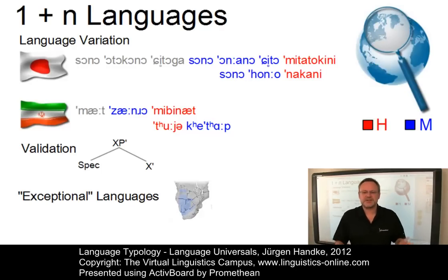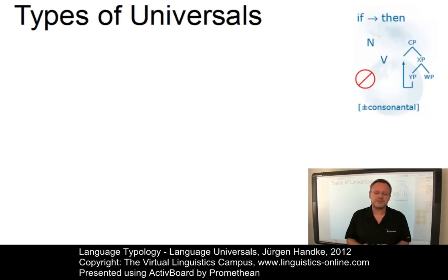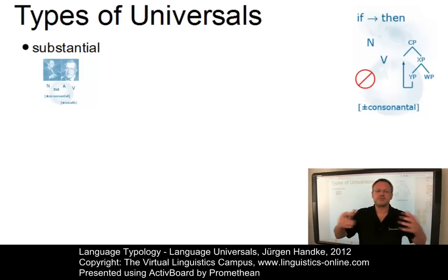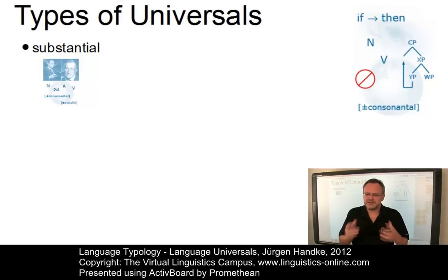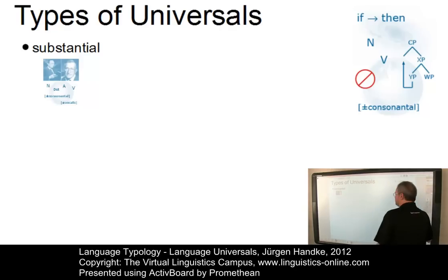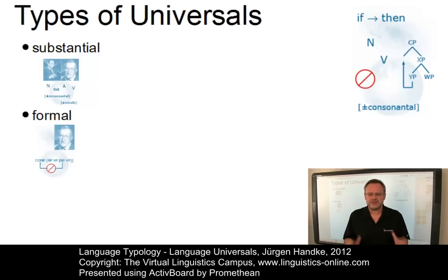Let us now look at the various types of universals that can be postulated. Universals can be categorized along several parameters. There are, for example, substantial universals — categories that must be present in each individual human language, such as the set of open-class syntactic categories: noun, verb, adjective, and so on. Formal universals are statements on the form of rules of grammar. In generative grammar, formal universals are expressed in terms of constraints — mechanisms that delimit the class of possible rules.